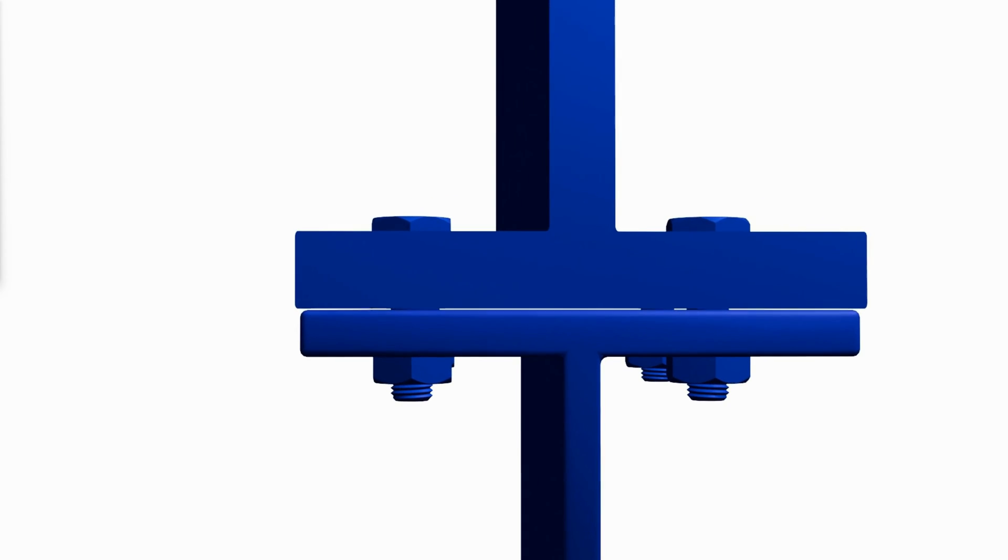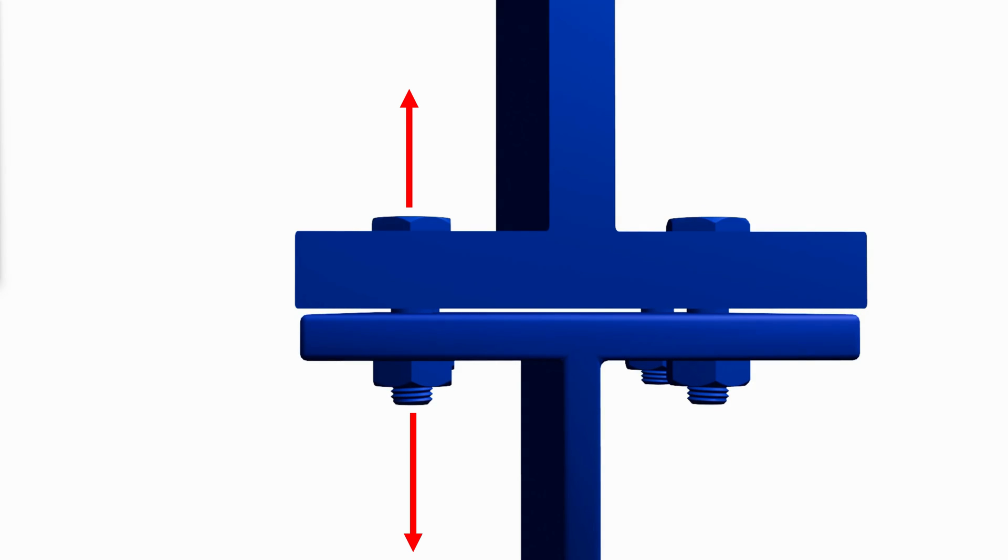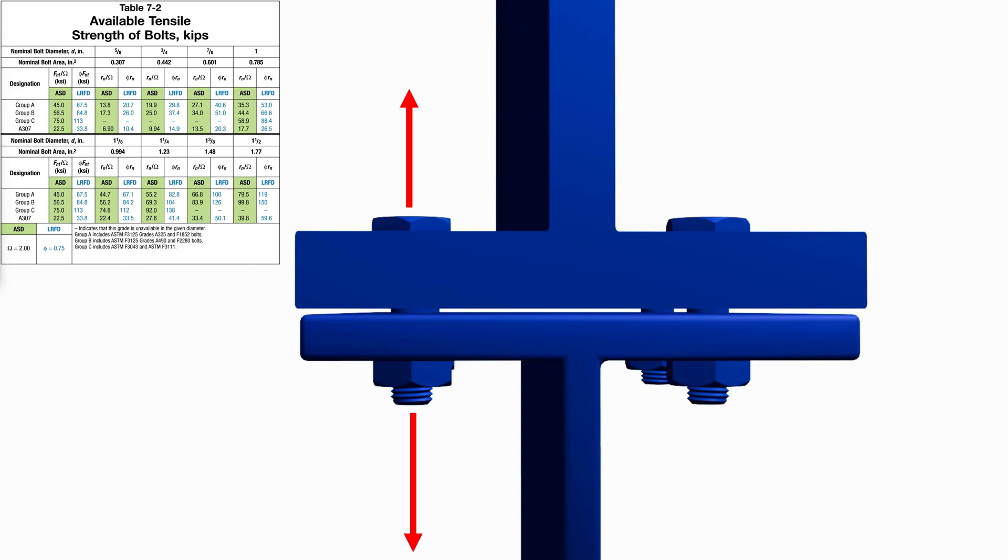If F increases even further, the flanges will separate and the tension in the bolt will continue to increase until it eventually exceeds the maximum tension allowed in the bolt, which can be found in the AISC Construction Manual Table 7-2 for different grades and diameters of bolts.